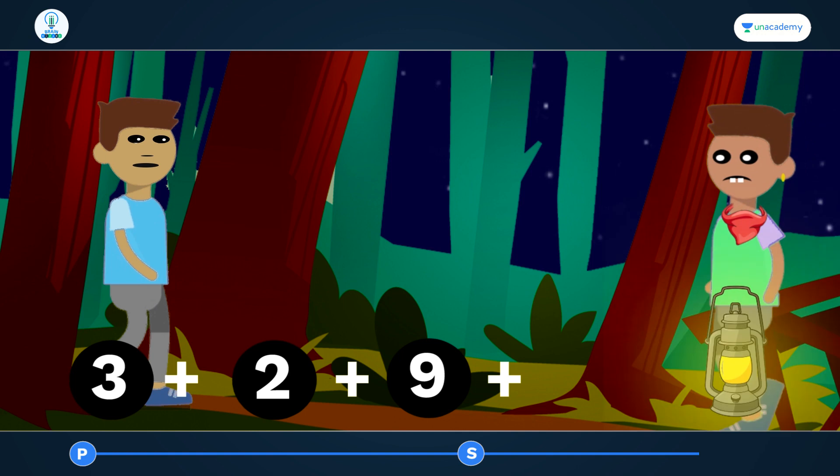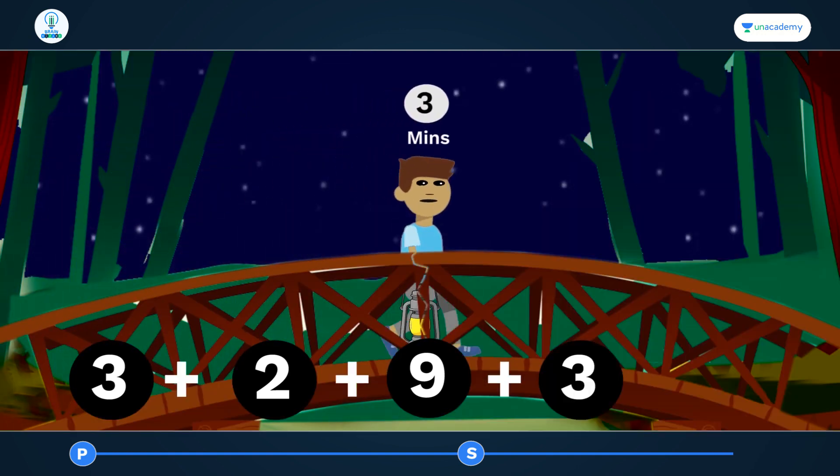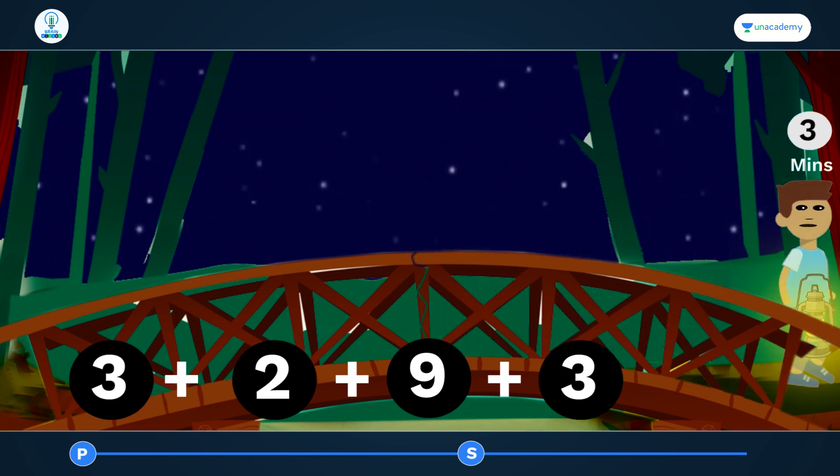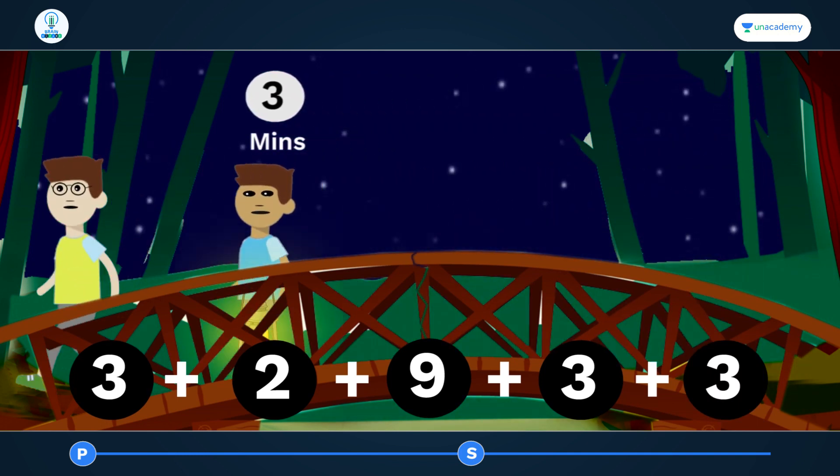Once they have reached the other side, they will hand over the lamp to Shyam, and Shyam will come back with the lamp which will take another 3 minutes. Finally, Akash and Shyam will again go together and it will take 3 minutes for them to reach the other side.